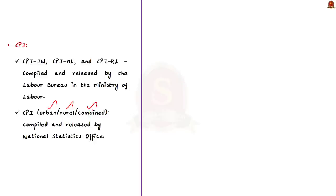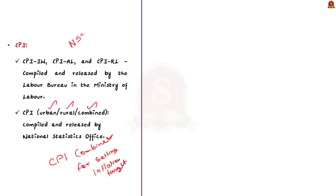Note that the RBI uses CPI Combined as the sole inflation measure for setting inflation targets and ensuring price stability. An important point: CPI Rural, CPI Urban, and CPI Combined were originally released by the CSO (Central Statistical Office), but as of 23 May 2019, the NSSO merged with the CSO to form the National Statistical Office. So in prelims, UPSC might ask who releases CPI and give both CSO and NSO as options — the correct answer is National Statistical Office, not Central Statistical Office.